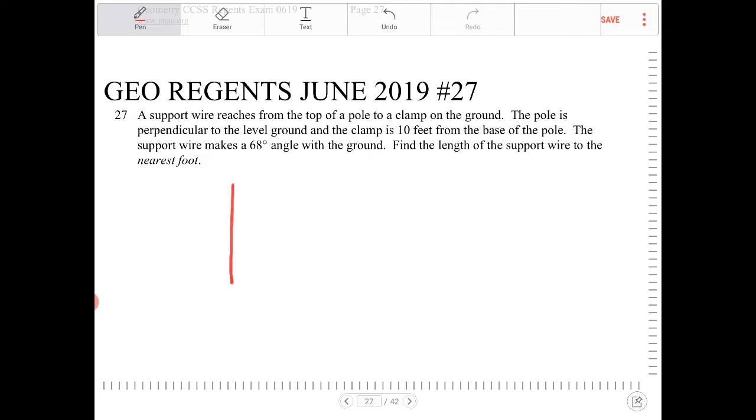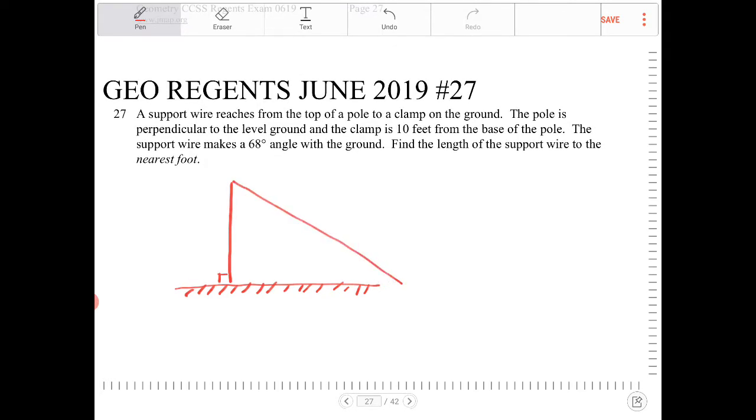The pole is perpendicular to the level ground and the clamp is 10 feet away from the base of the pole. So this is the wire and this is going to be 10.